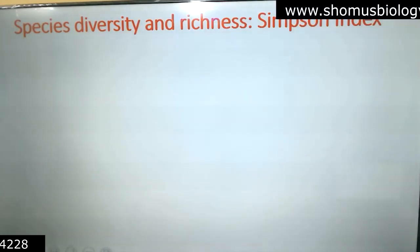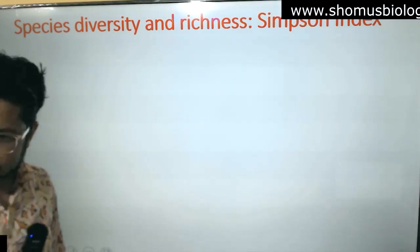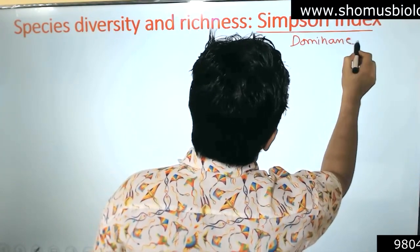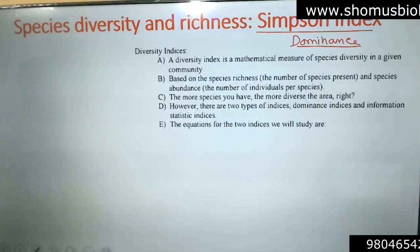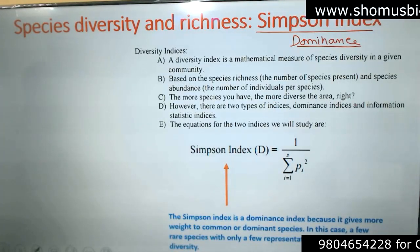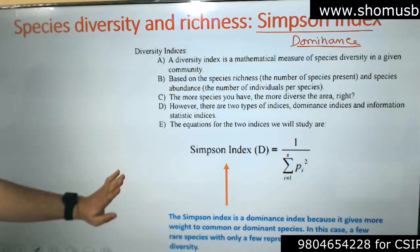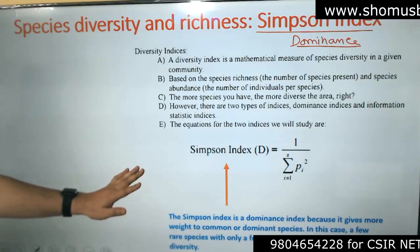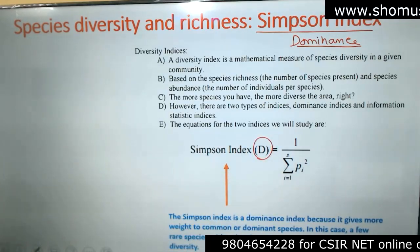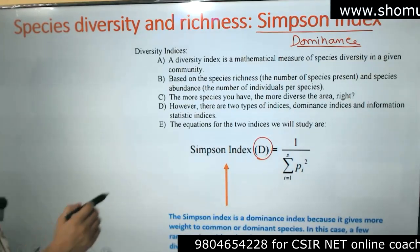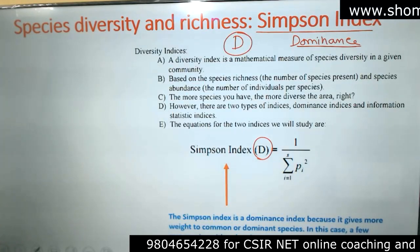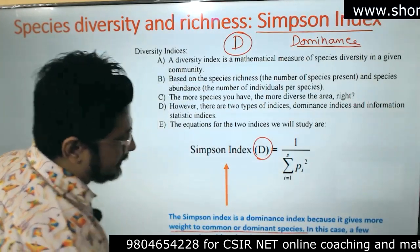The other type is the dominance index, known as the Simpson index, denoted with capital D. The equation for Simpson's index is: D = 1 / Σ(Pi²). It is called a dominance index because it gives more weight to common or dominant species in the community.